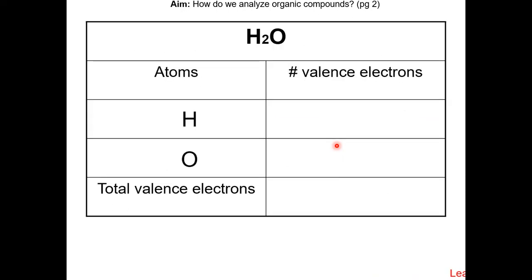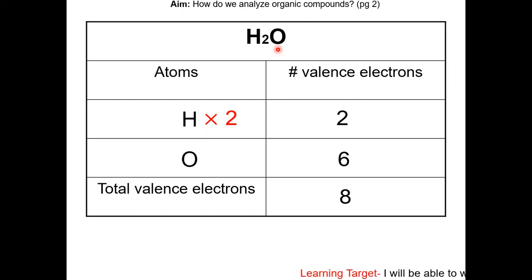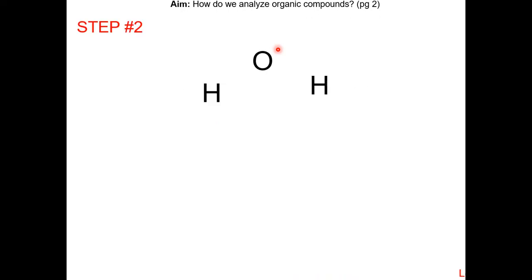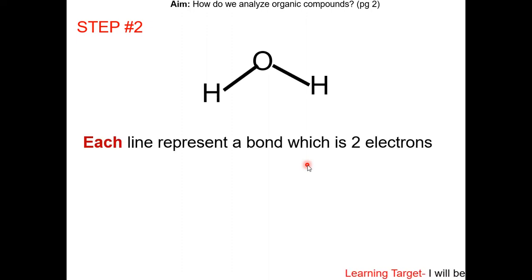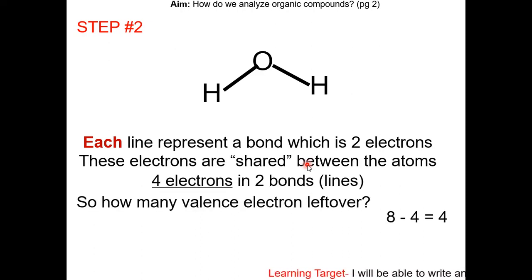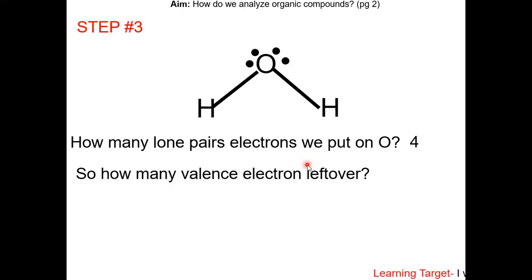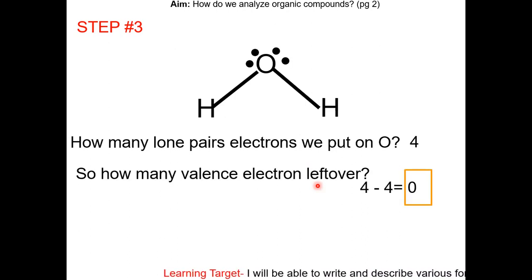Let's look at H2O. The first step is to count the total valence electrons in water. Each hydrogen has one and each oxygen has six, so the total valence electrons in H2O is eight. The next step is to figure out which element is the central atom. Since oxygen forms the most bonds and has a smaller subscript, it is the central atom. Now we connect each hydrogen atom to oxygen — two bonds, each bond represents two electrons, so we use four electrons with four left over. We put the four leftover electrons onto the central atom, oxygen. Since there's zero electrons left over, we are done.